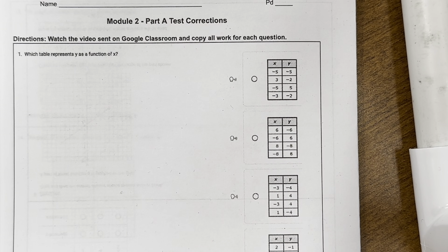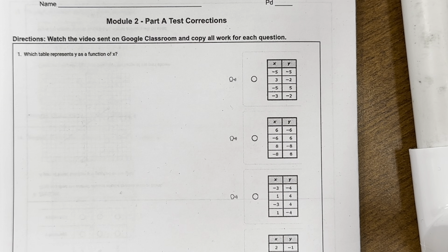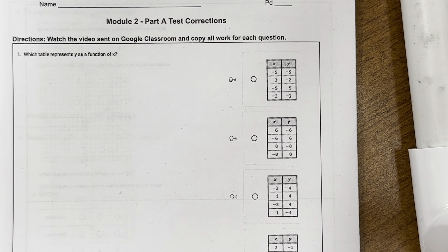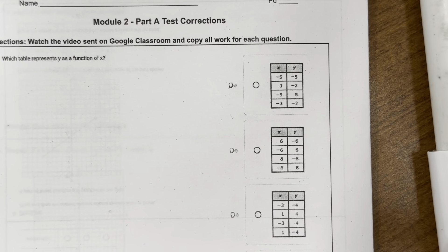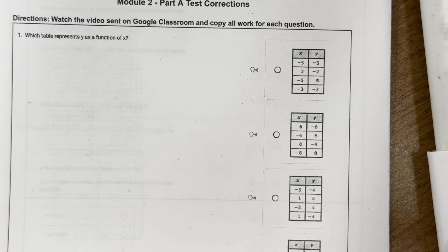This is your Module 2 Part A test corrections for algebra. You have to watch the video on Google Classroom and copy all the work for each question in order to receive credit for doing the corrections. First, make sure your name is on it.